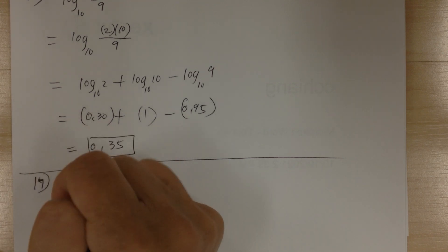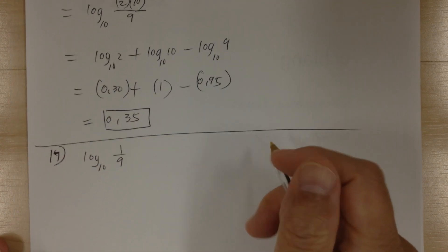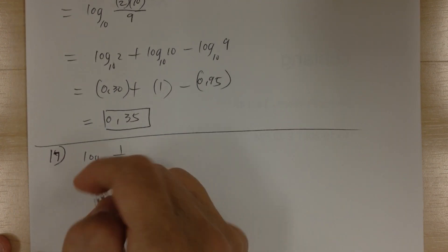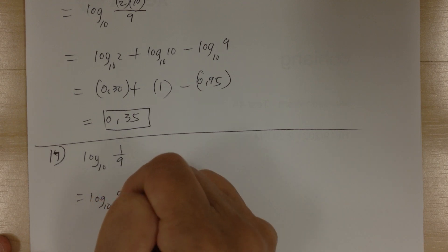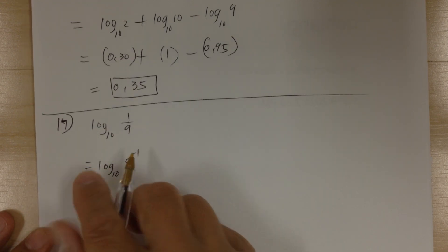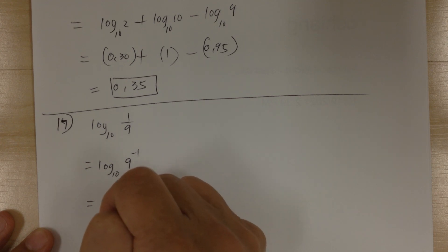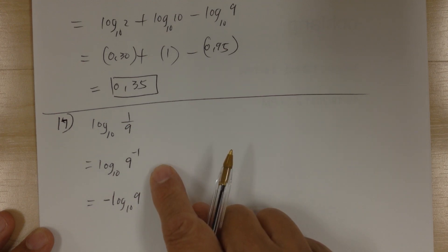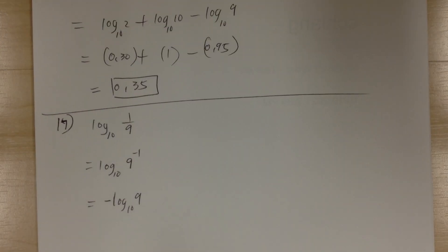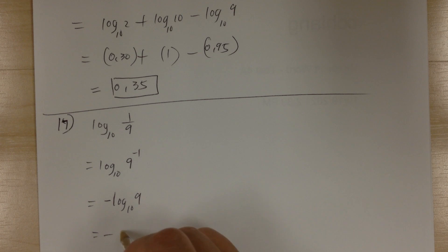Number 17. Log base 10 of 1 over 9. You can flip it over using the negative exponent, so it becomes 9 to the negative 1 power. Then bring that out: it's equal to negative 1 times log of 9. Substitute: log 9 is 0.95, so this equals negative 0.95.